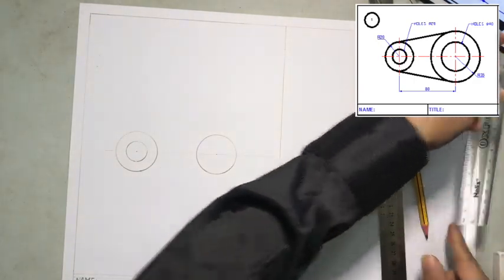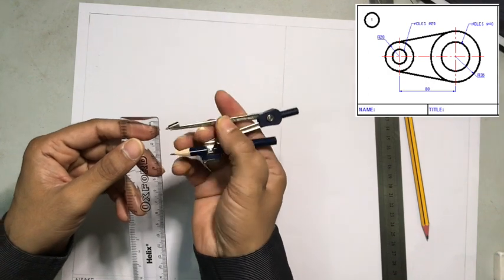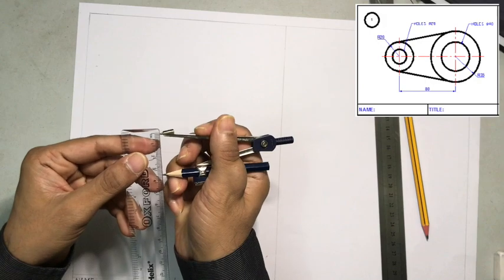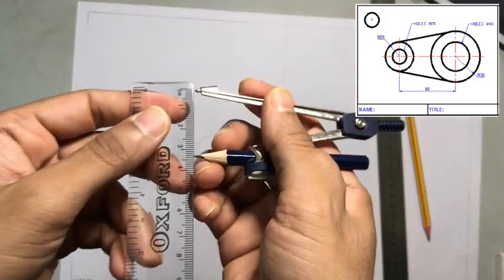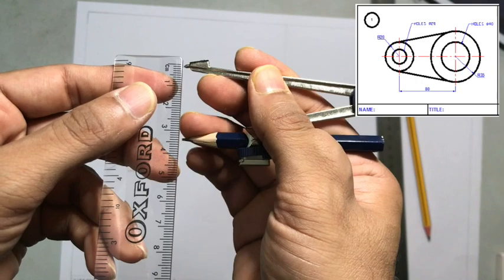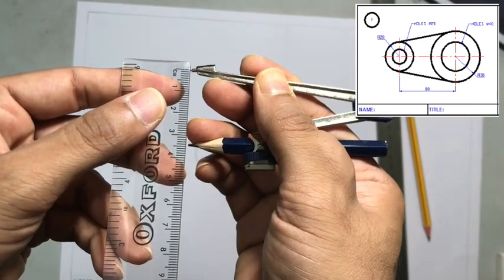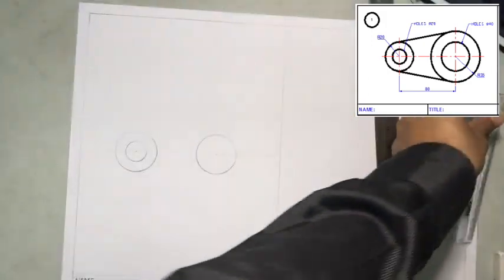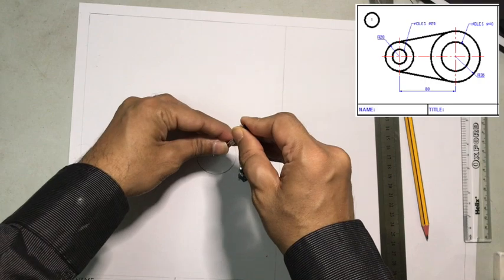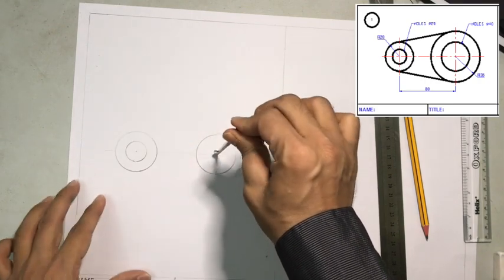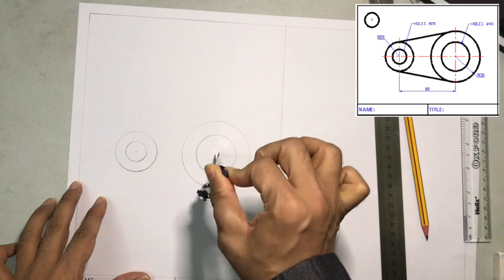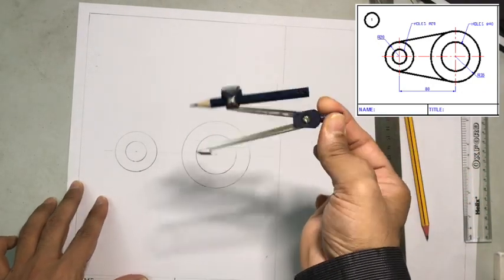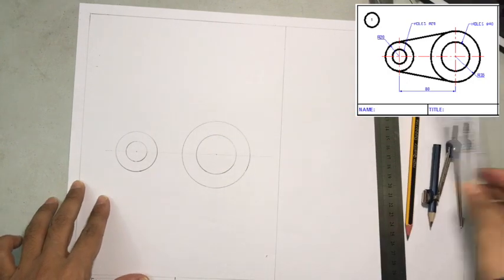Now the last circle is going to have a radius of 35 millimeters, so make it bigger. I'll come closer you can see - yeah this is 35. With this as center draw a circle and done. Hold it here in the tip and then just twist it so it is easy. Now take a scale.